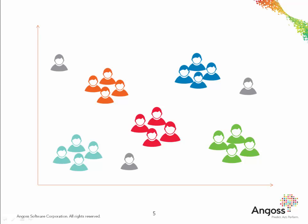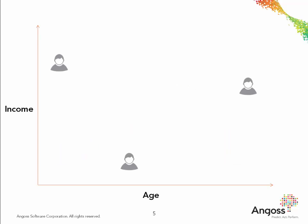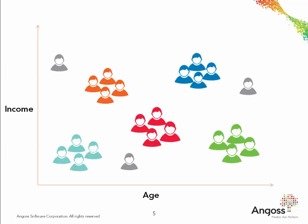For example, consider a scatter plot where each point represents a customer with respect to their age and income. Notice that there are five distinct segments in the data set, and there are also some points with extreme values which may be interpreted as outliers. Clustering algorithms find these segments in the data and label each record with the cluster or segment that it belongs to.